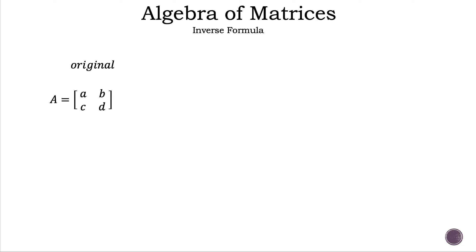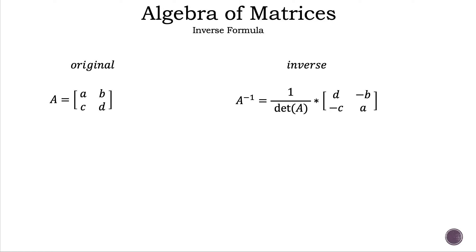Now let's look at the formulas. Here we have a 2 by 2 square matrix with letters as their elements. The inverse of this type of matrix is 1 over the determinant of A times a 2 by 2 matrix, where we have in the first row D and negative B, and in the second row negative C and A.